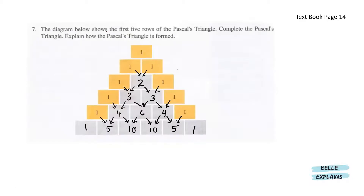Next, the diagram below shows the first 5 rows of Pascal's triangle. Complete the Pascal's triangle and explain how it is formed. In the edges of the triangle, we have 1, 1, 1, 1, 1, which means here will also be 1 and 1. In between, we have 1 and 1, which means 1 plus 1 gives us 2. Since here is 2 and here is 1, adding gives us 3. 2 and 1 give us 3. 3 and 3 will give us 6. 3 and 1 will give us 4.